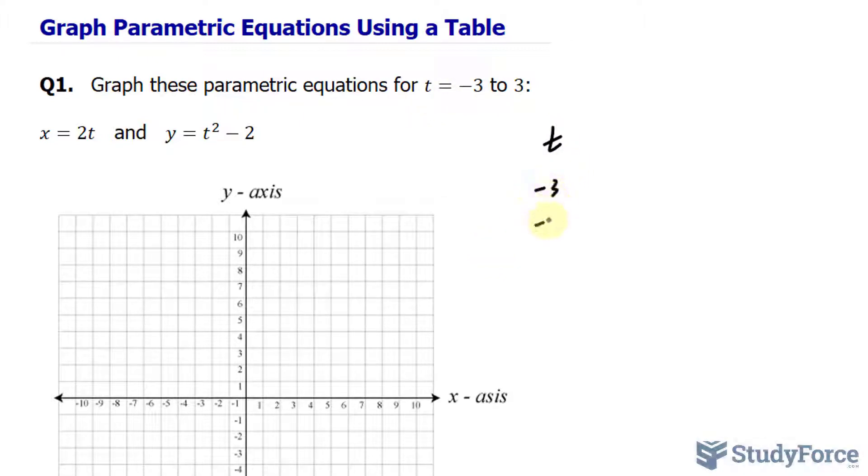So I have negative 3, negative 2, negative 1, 0, 1, 2, and 3. Another column dedicated to the x, and a third column dedicated to the y.